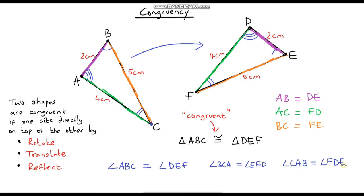In summary, with congruent shapes the corresponding side lengths are the same and the corresponding angles are the same. If we can rotate, translate, or reflect one shape onto the other — or a combination of all three — then those two shapes are congruent. In the next video we'll look at more shapes and work out whether they are congruent or not.